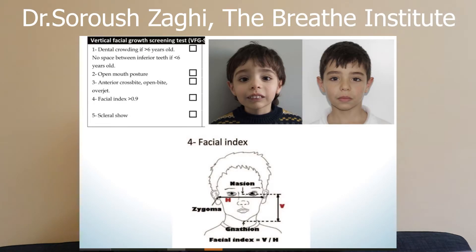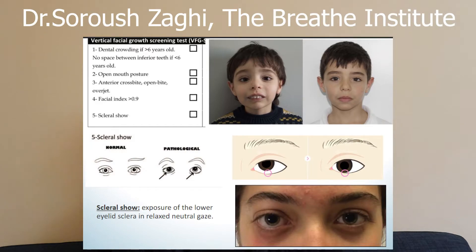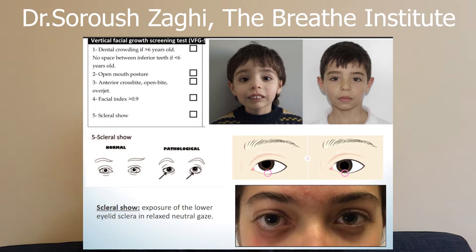This next one is super interesting — it's called scleral show. The little white space below the eye is called the sclera. In a healthy person's relaxed, neutral gaze, you should not be able to see much, if any, white under the pupil. If you do see white under the pupil, this is called scleral show and is a sign of craniofacial abnormalities. You can just look at someone's eyes and tell if they're prone to sleep apnea.